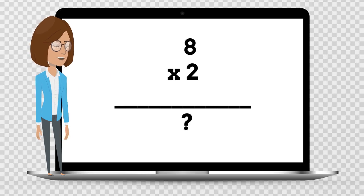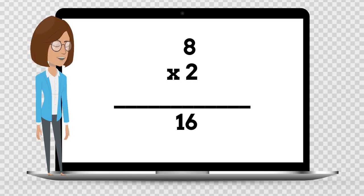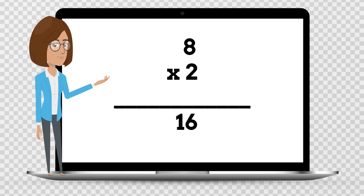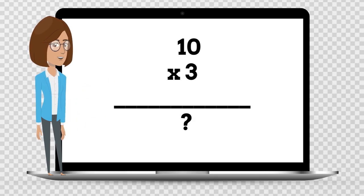8 times 2 is — say the answer out loud. 8 times 2 is 16.